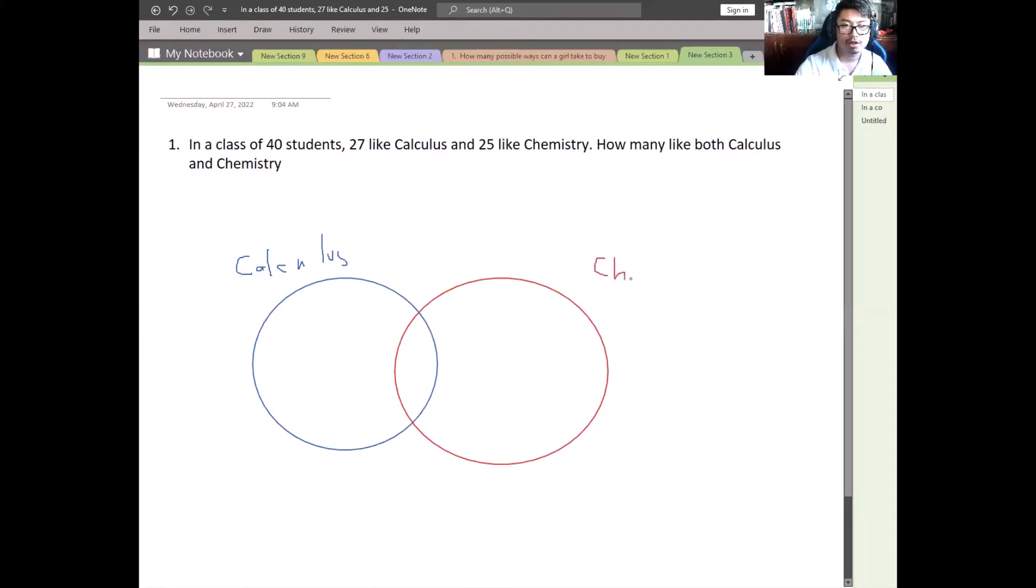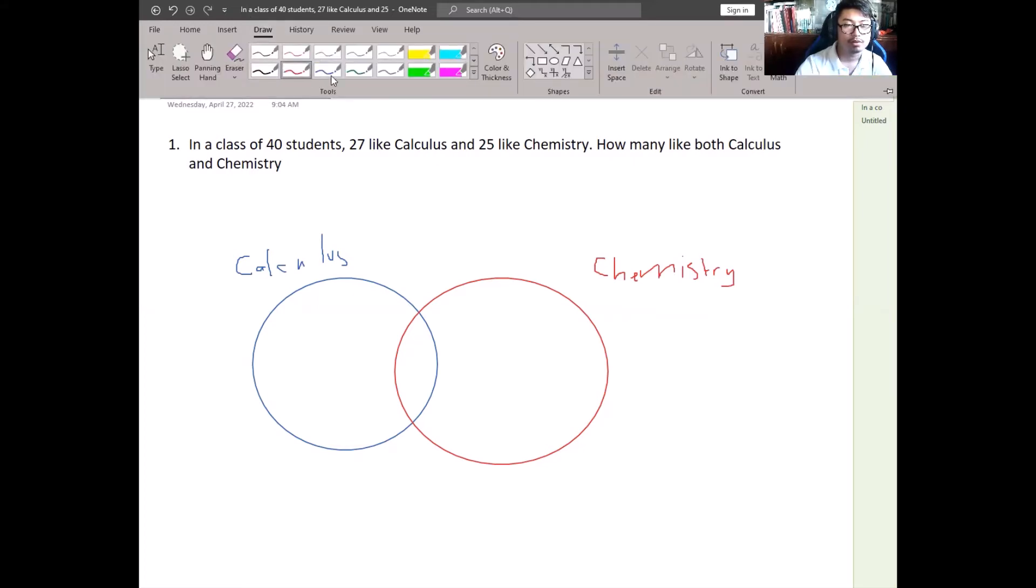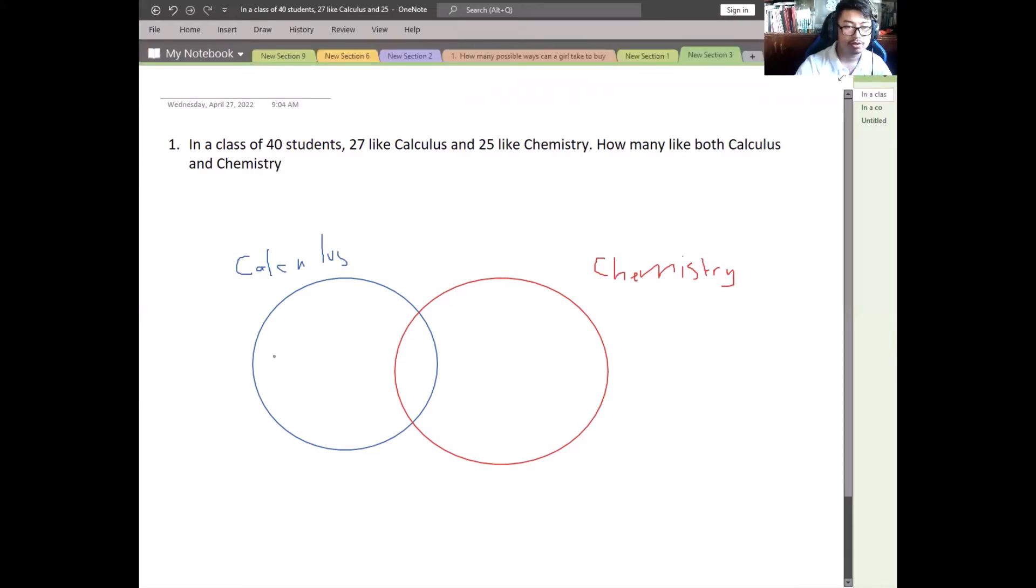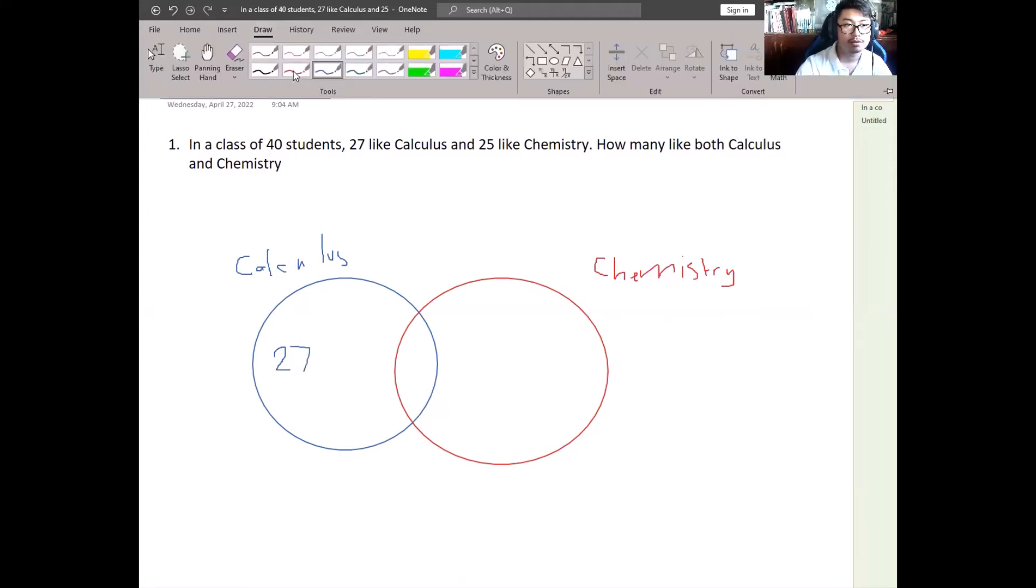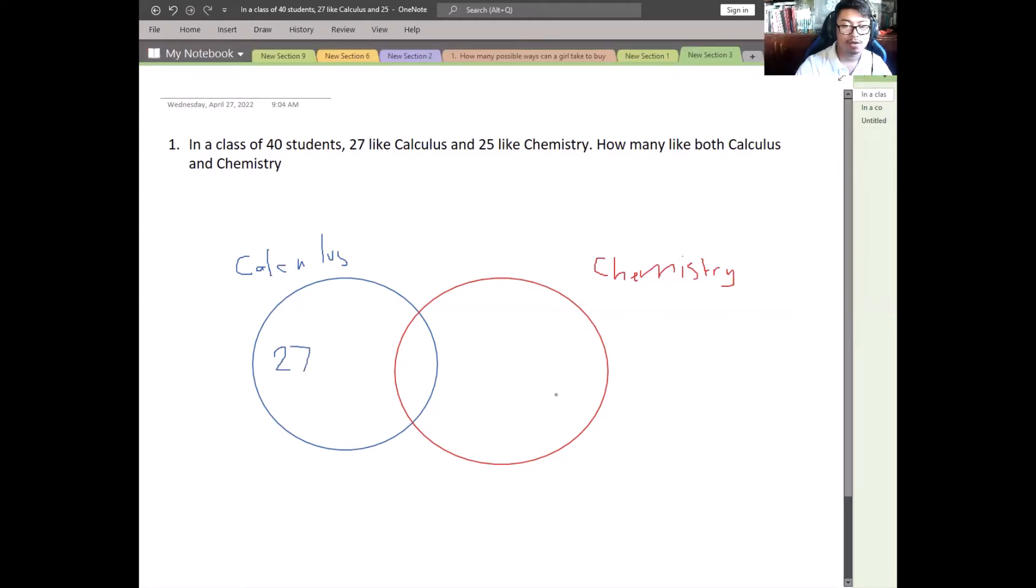The question here is how many students like both Calculus and Chemistry out of 40 students. So in 40 students, 27 like Calculus. We will write 27 here. And for Chemistry, 25.